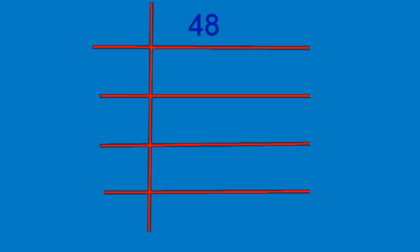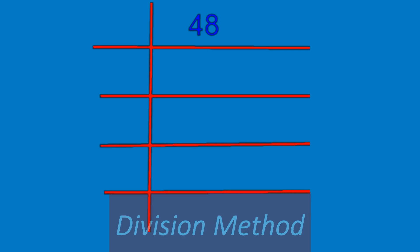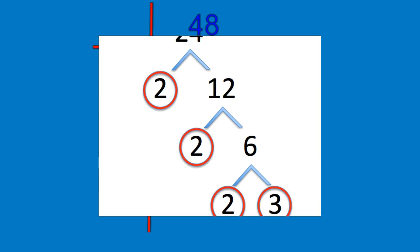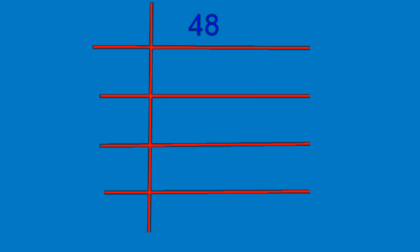This is the most conventional way of finding prime factors of any number. Before this video, I showed finding prime factors by the tree method. Here I will show finding them with the help of the division method, using the same example: 48.